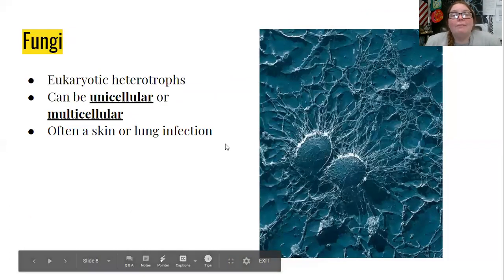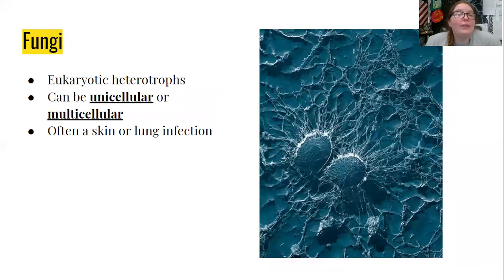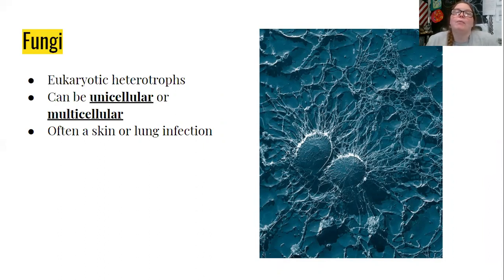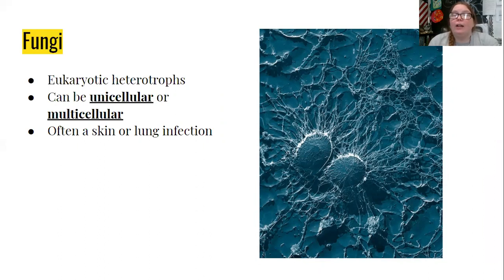Fungi — they can make you sick too; literally they can infect you. They're eukaryotic, meaning they have a nucleus, and they're heterotrophs. Hetero means different and trophic has to do with eating, so they need to get their food from something other than themselves. On the other side, a plant is an autotroph — they get their food by themselves through photosynthesis. A fungus can be unicellular, which means one cell like yeast, or multicellular like a mushroom.